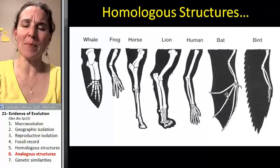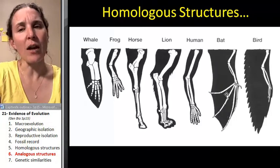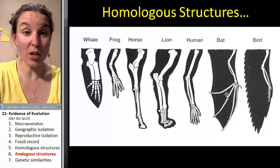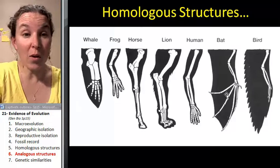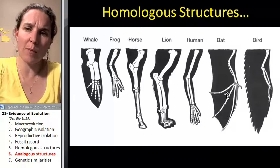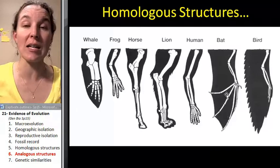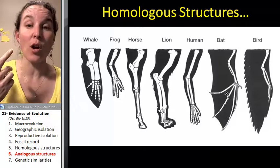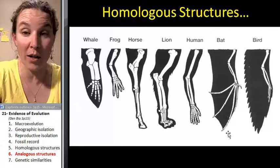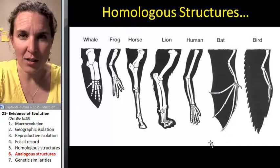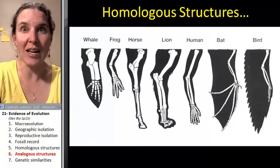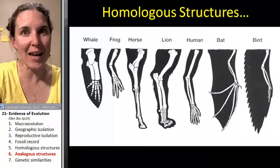I'm telling you this because we're going to use this when we start looking at biodiversity. We're going to look at these critters and ask: do they have characteristics that indicate relatedness? You're going to start learning and memorizing who's related to whom, based on what characteristics. The last thing we're going to look at is the fact that you can use genetics to determine relatedness.